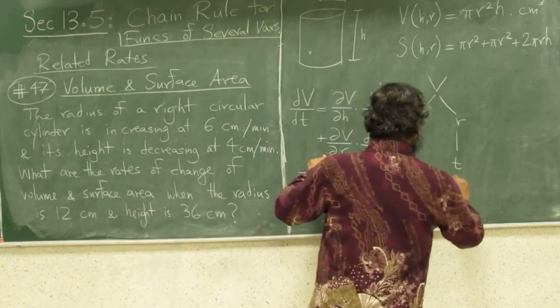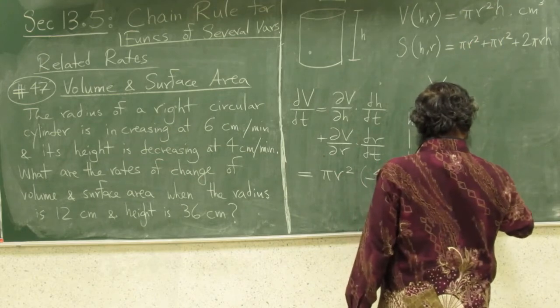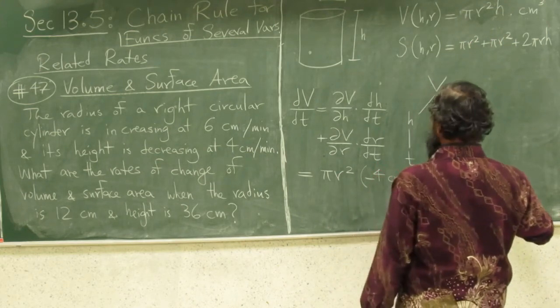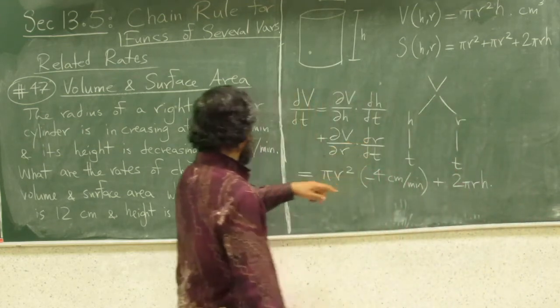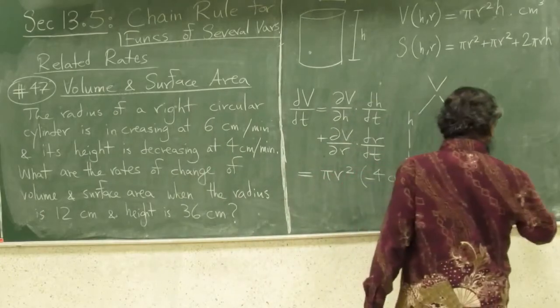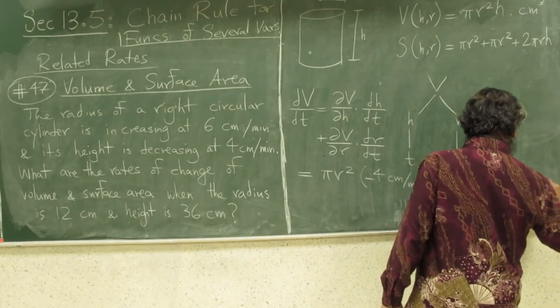Plus dv/dr is 2 pi r h times dr/dt. And dr/dt, the radius is increasing at 6 centimeters per minute, so 6 centimeters per minute.